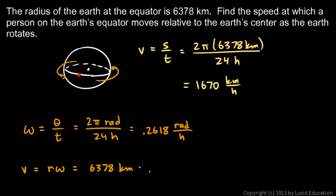.2618 radians per hour. And you multiply that out, and it comes out to 1,670, and you see we have kilometers per hour.